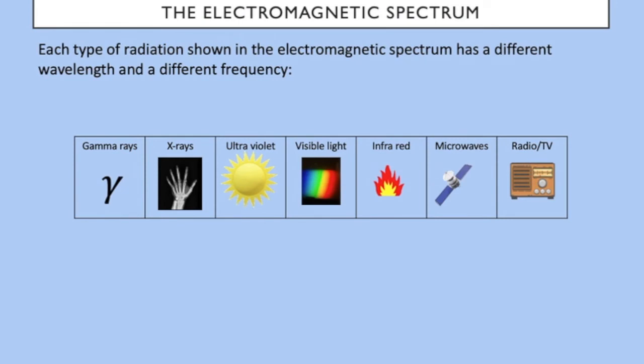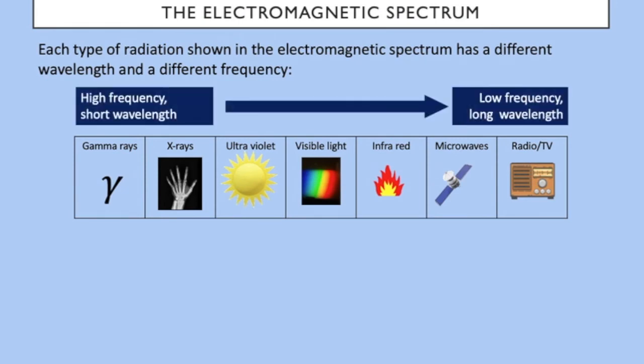Each type of radiation shown in the electromagnetic spectrum has a different wavelength and a different frequency. So we've said that the highest frequency and the shortest wavelength is the gamma, and that goes all the way through to the low frequency long wavelengths of the radio waves.